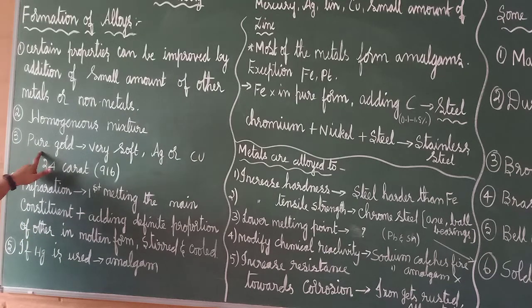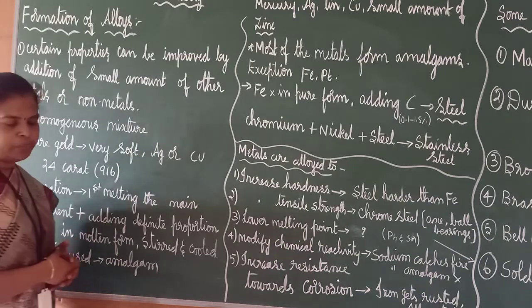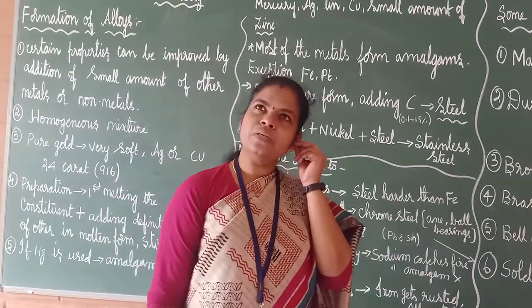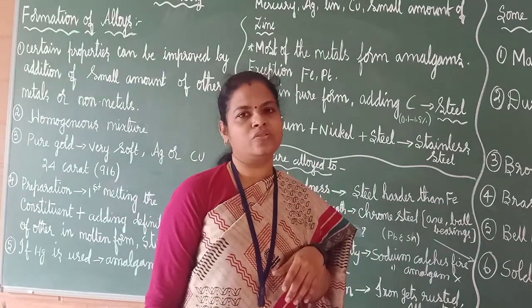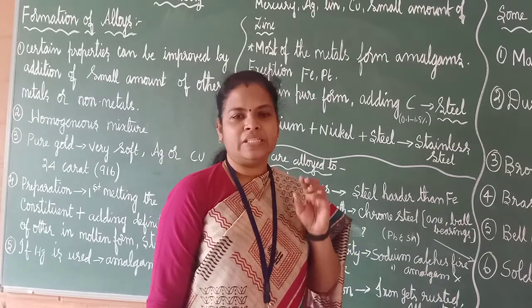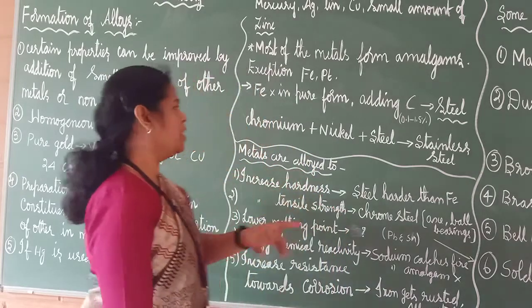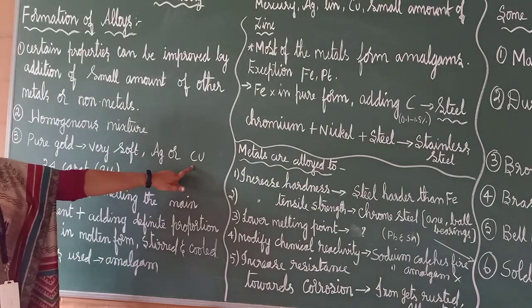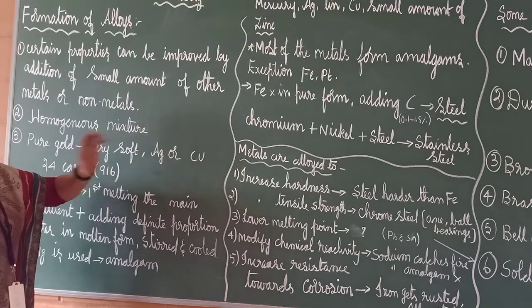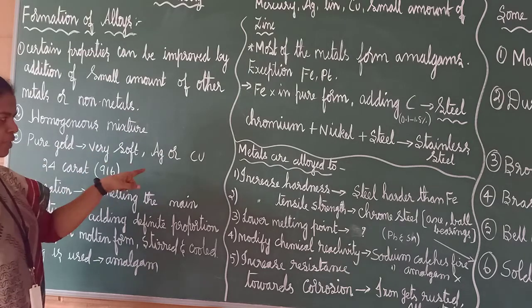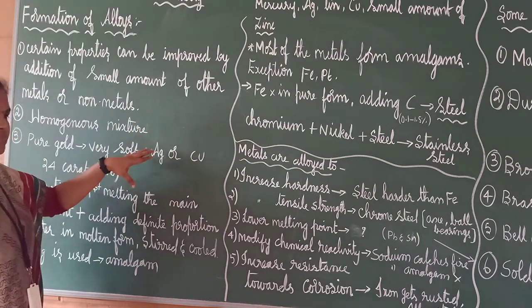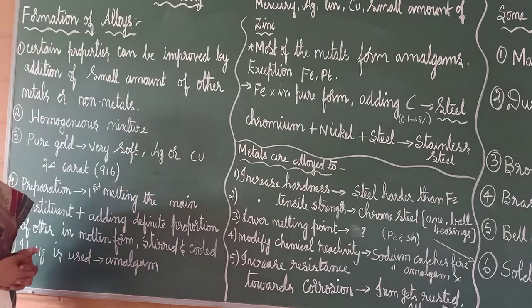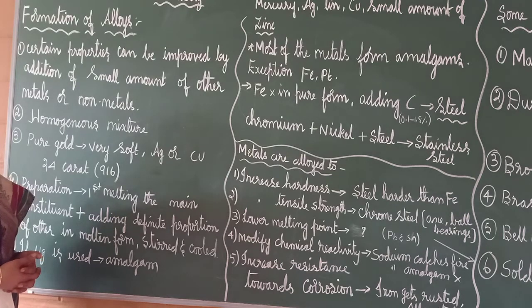For example, pure gold. We can't make jewellery with pure gold. So, we are telling 24 carat. 24 carat means what? It is 22 parts of gold and 2 parts of it can be Ag or Cu. 22 parts of gold and 2 parts may be silver or it may be copper. It will be added homogeneously. So, it is called as 24 carat.